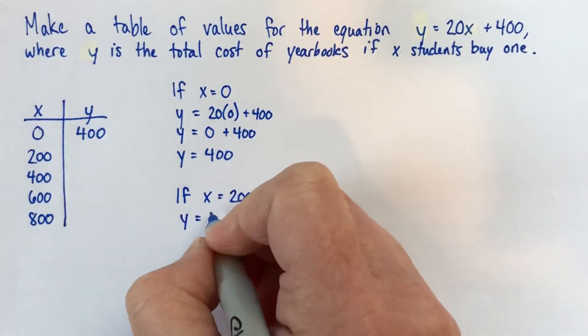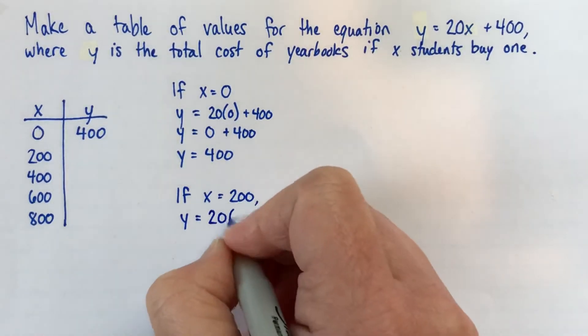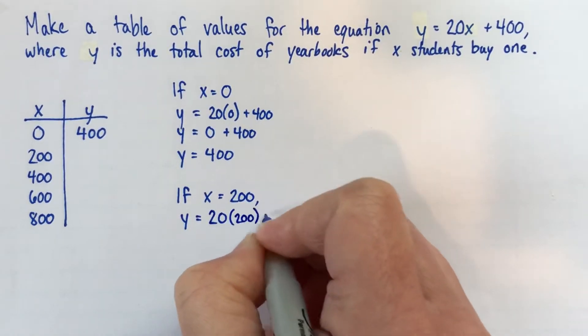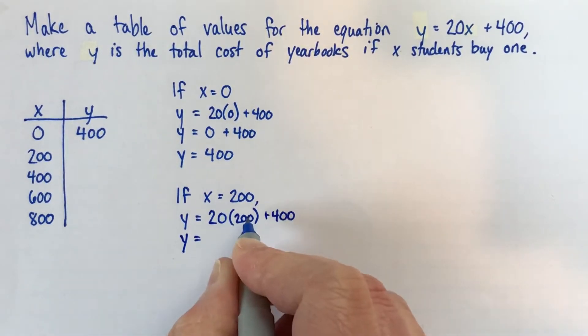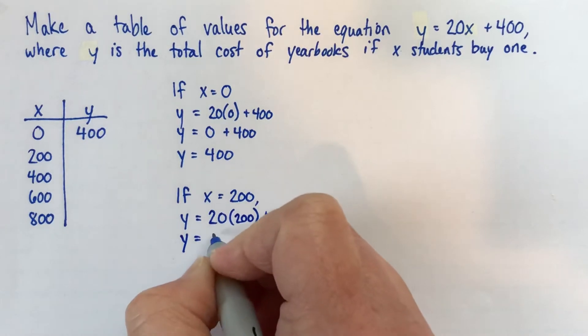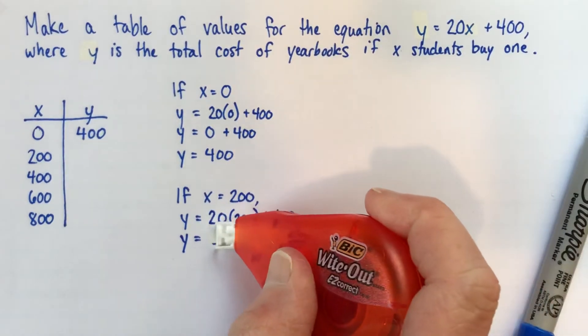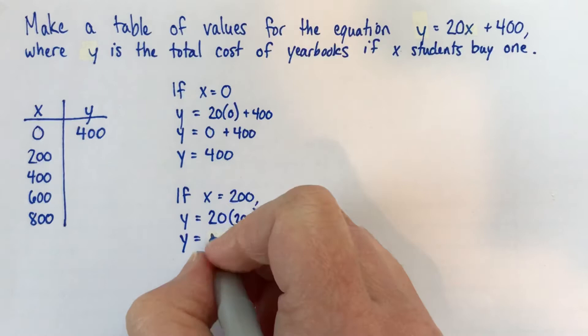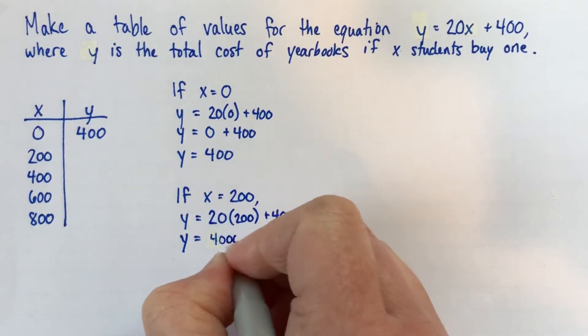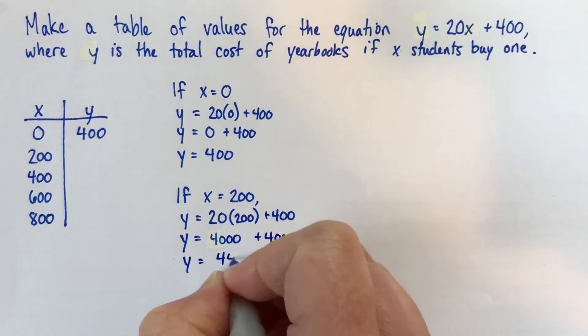So I'm going to copy the equation, but I'll substitute for my x, I'll substitute 200. So y is 20 times 200, plus 400, so 20 times 200 is 4,000, 4,000 plus 400, so that's 4,400.